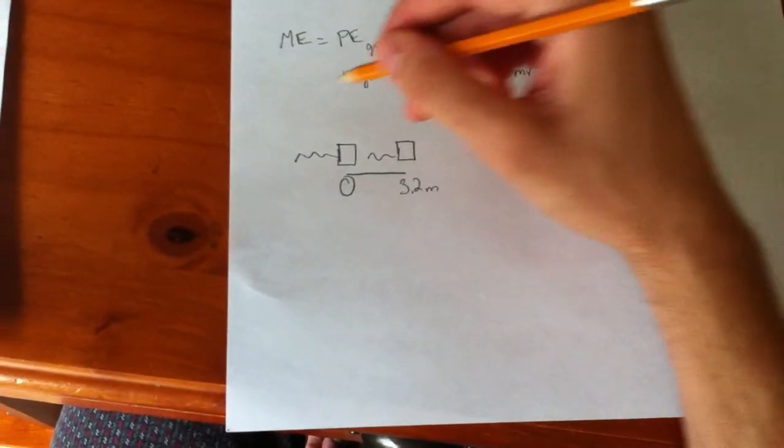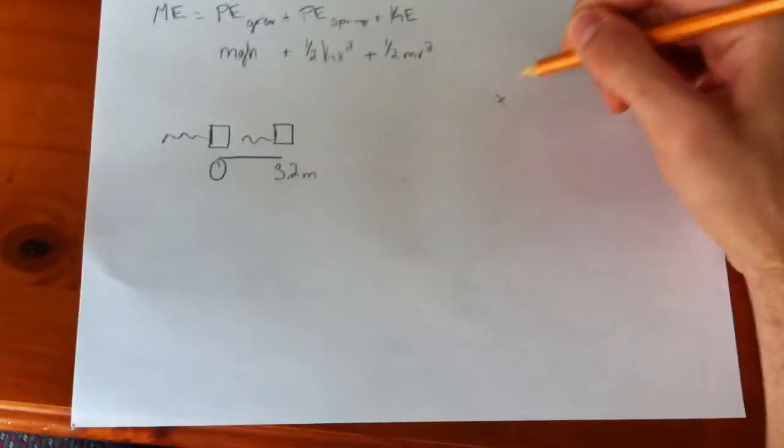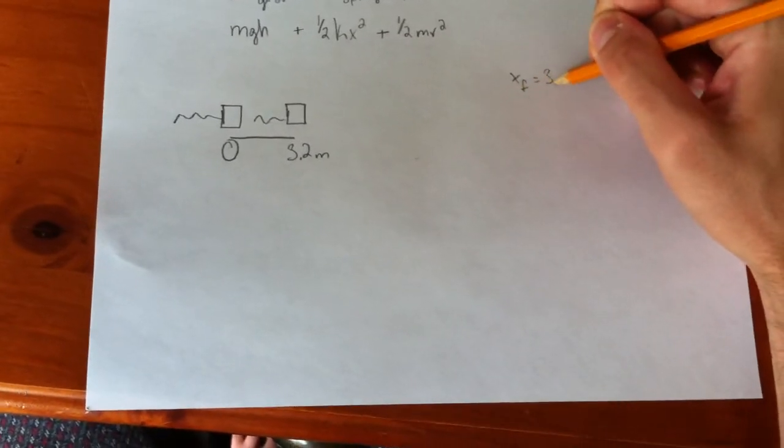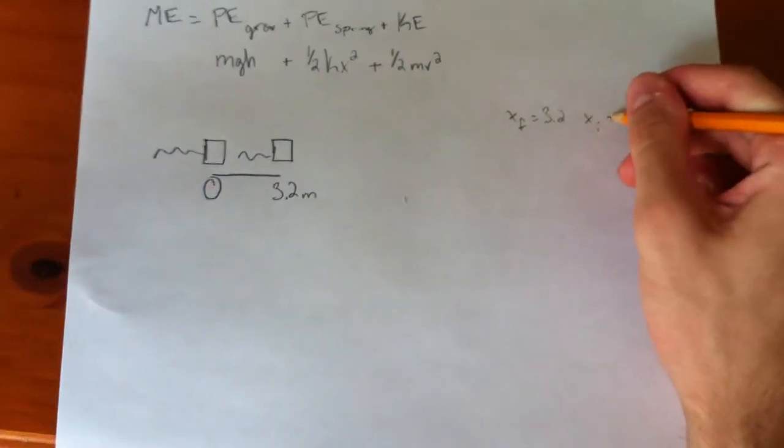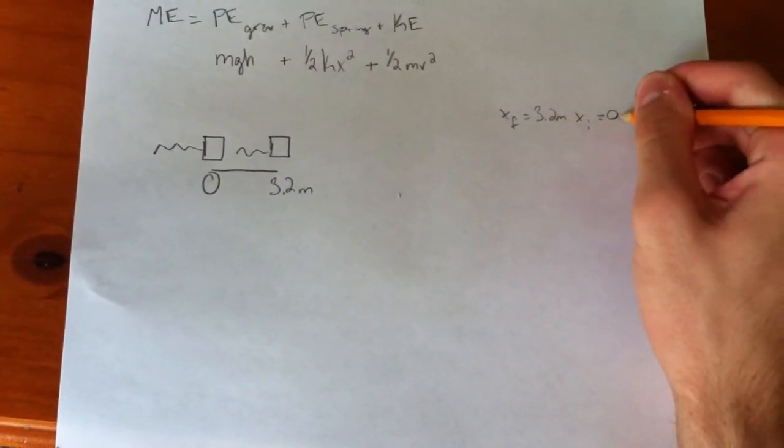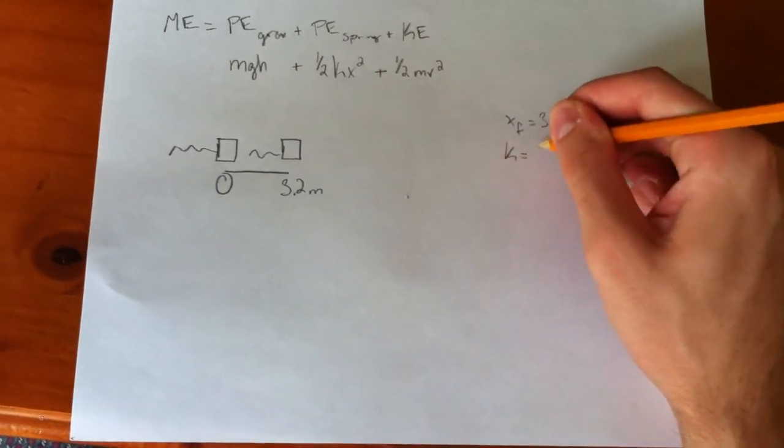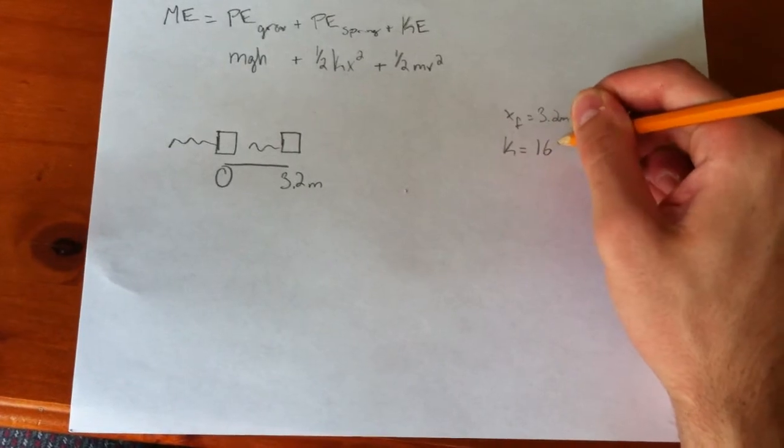So, xf equals 3.2, xi equals zero meters. Our spring constant, we'll say, is 169.